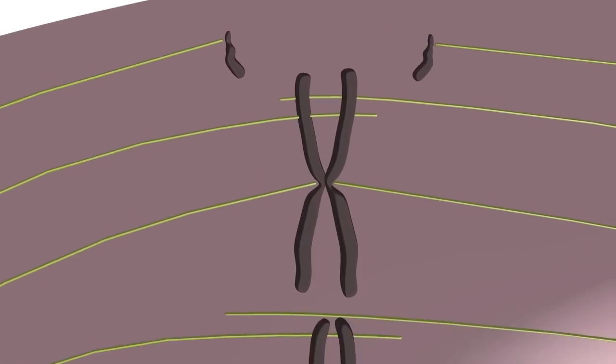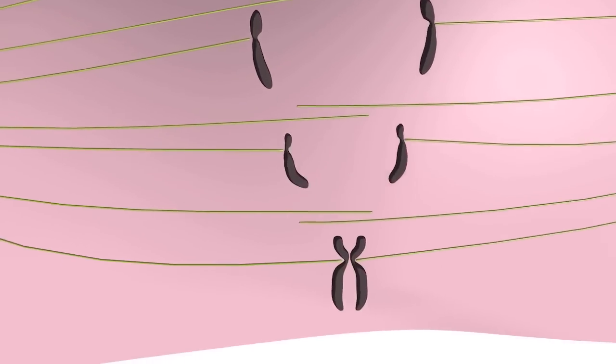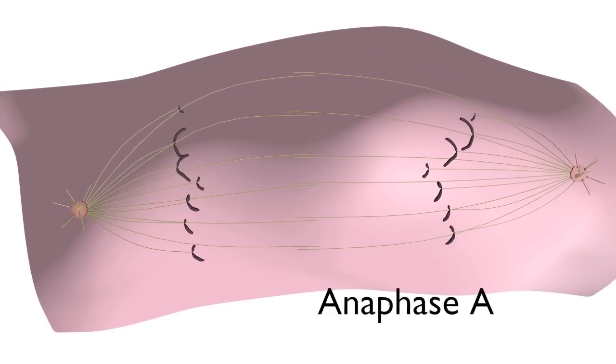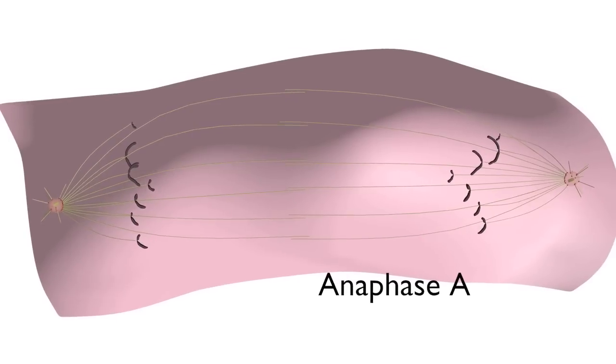The microtubules can now pull the separated sister chromatids towards their respective spindle poles in what is known as anaphase A. In addition, the spindle poles move away from each other in what is known as anaphase B.